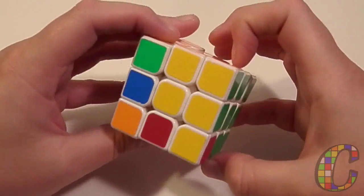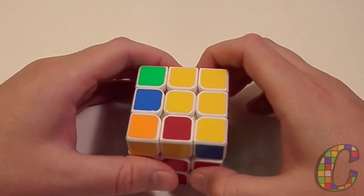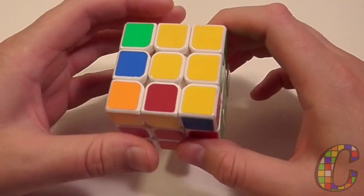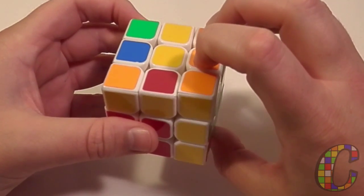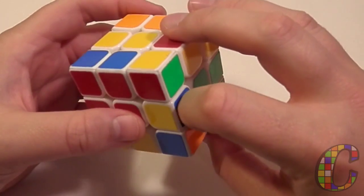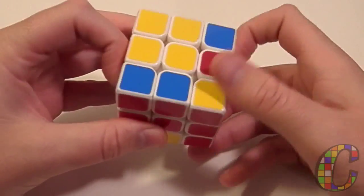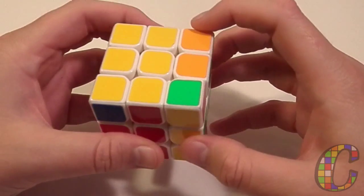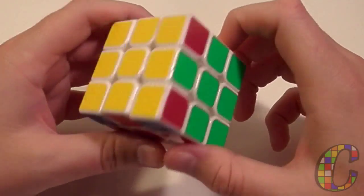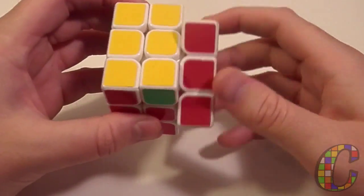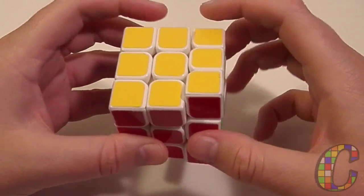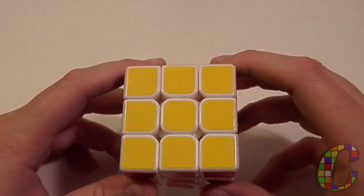Alright, this OLL, let's see, I knew it, it's just going to be really slow. R prime, U prime, F, F prime, R. There we go. And that leaves us with a straightforward U prime. Alright, next scramble.